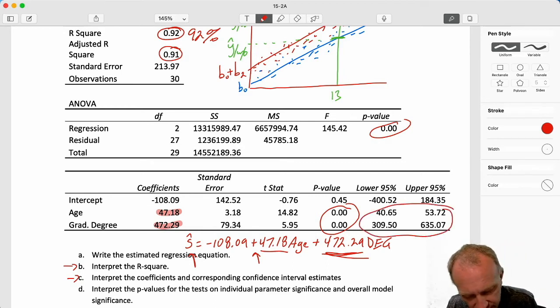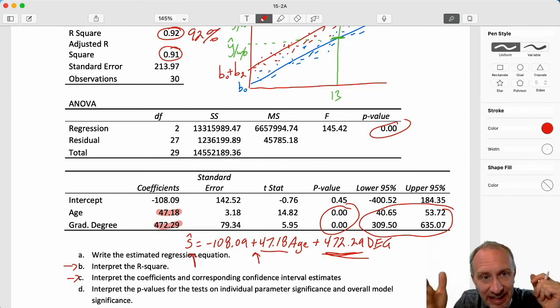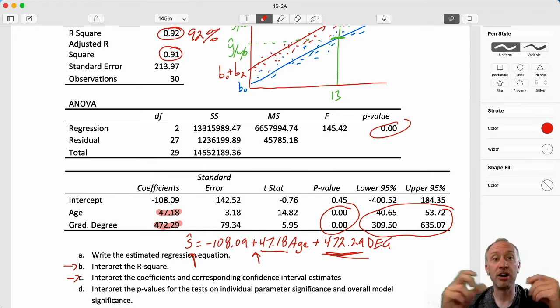Before I forget, these intervals. On age, we had that point estimate: each additional year older that you are, average salary increases by $47,180 per year. I'm 95% confident that average salary increases between $40,650 and $53,720 per year older that you are. That's that interval estimate of that marginal effect. Having a graduate degree increases average salary relative to not having a graduate degree by between $309,500 and $635,070. So again, not an incremental change, not a marginal effect. Having the graduate degree corresponds, or I'm 95% confident that having a graduate degree increases average salary by between $309,000 and $635,000.